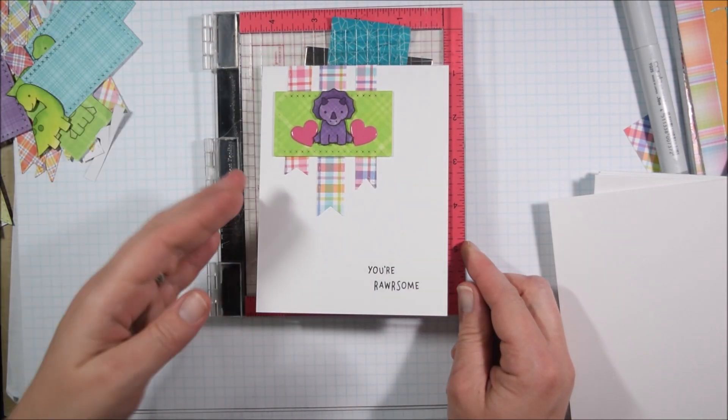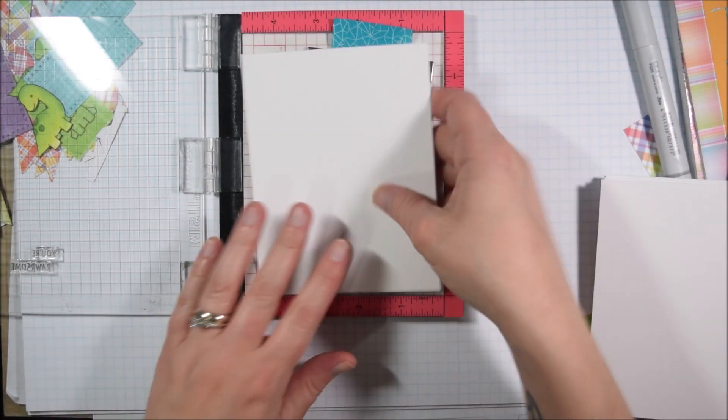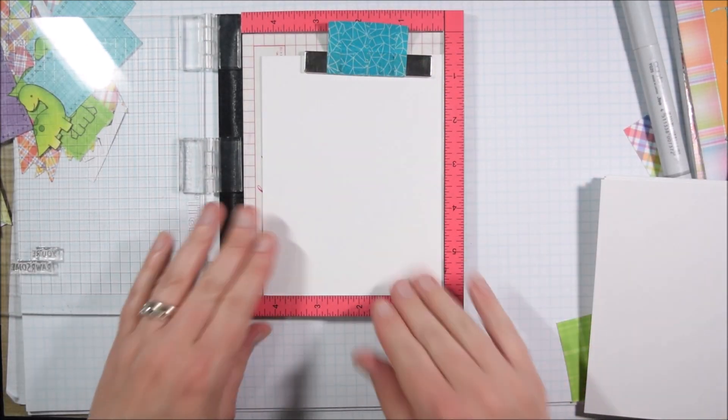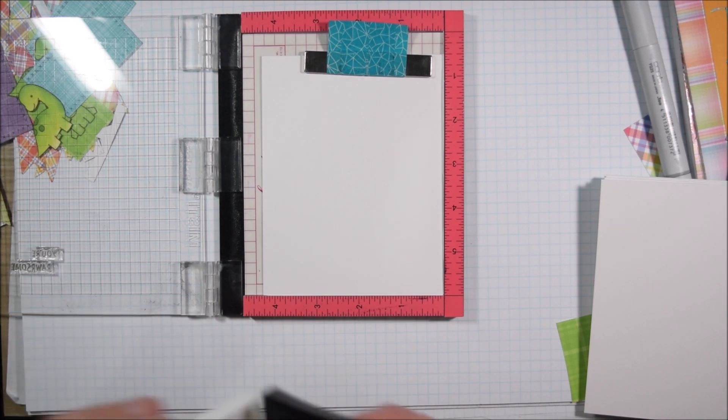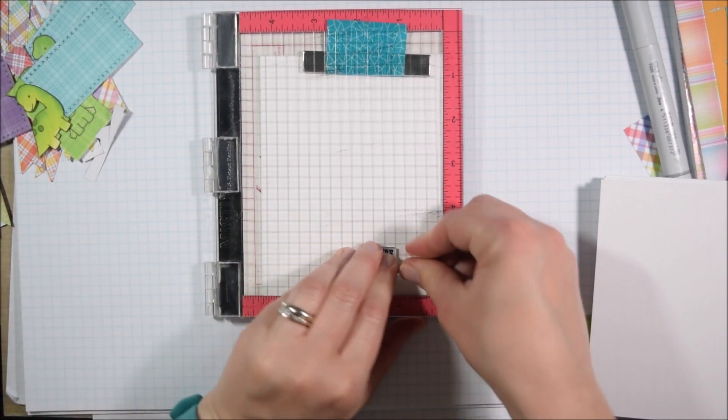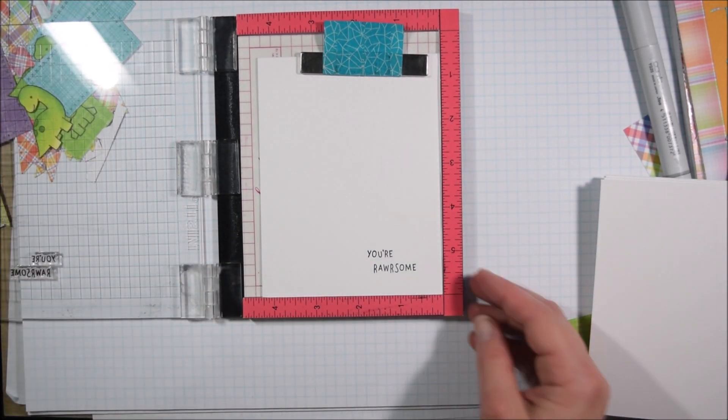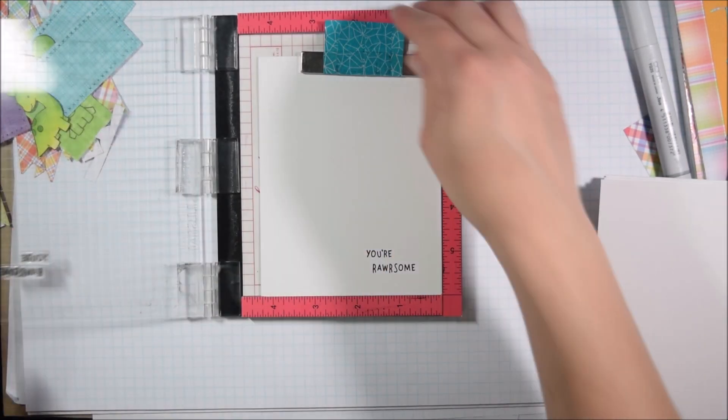I traced around the edges with a Memento Tuxedo Black marker, and that just kind of made the edges look a little bit more finished and covered up any mistakes I may have made while fussy cutting. Because I die cut a ton of these, I think I made eight cards in all.